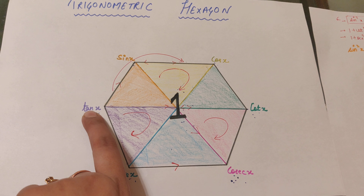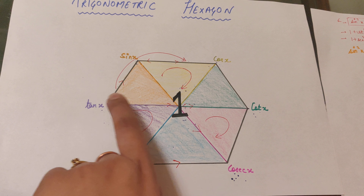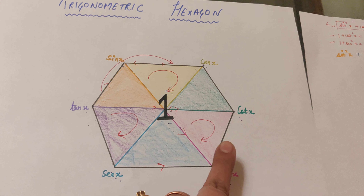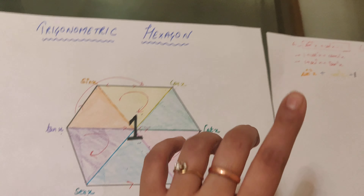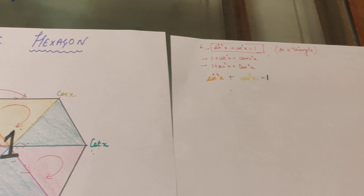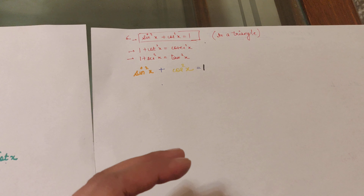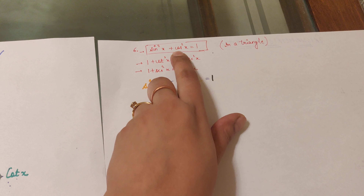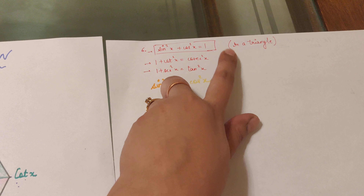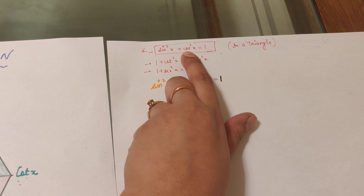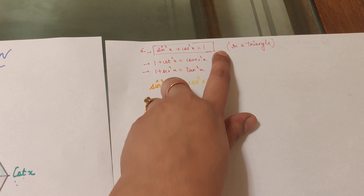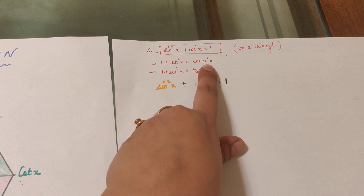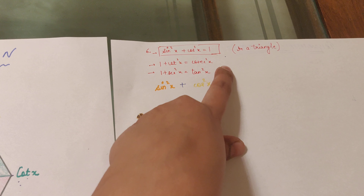The last and very important identity: sin²x + cos²x = 1. To find this, look at the triangles inside the hexagon. Starting from the yellow triangle at the very left and moving clockwise, squaring all the terms gives sin²x + cos²x = 1.